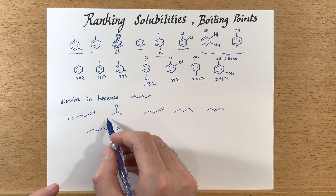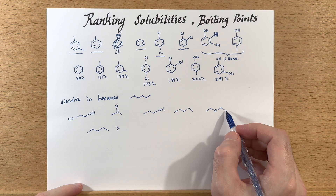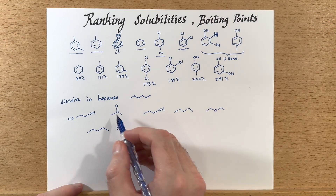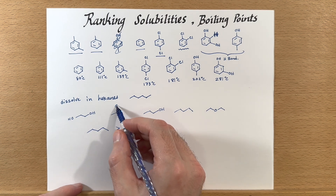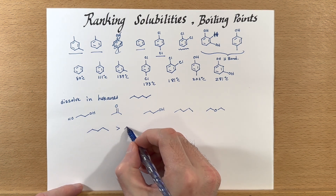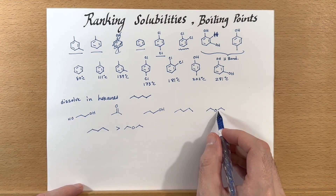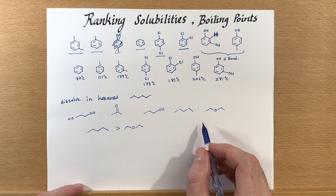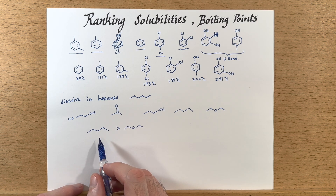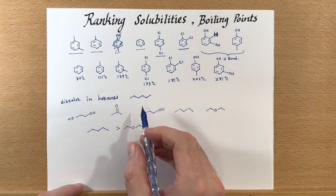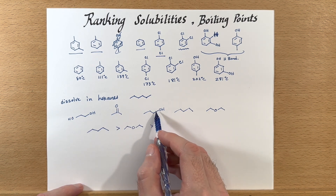Next we need to look at what's most similar. It's really between acetone and diethyl ether — both have a dipole and some hydrocarbons, but the ether has a lower dipole than the ketone, which is a little bit more polar. So we can predict that diethyl ether should be a little bit more soluble — maybe not quite as soluble as pentane, but it should dissolve quite well.